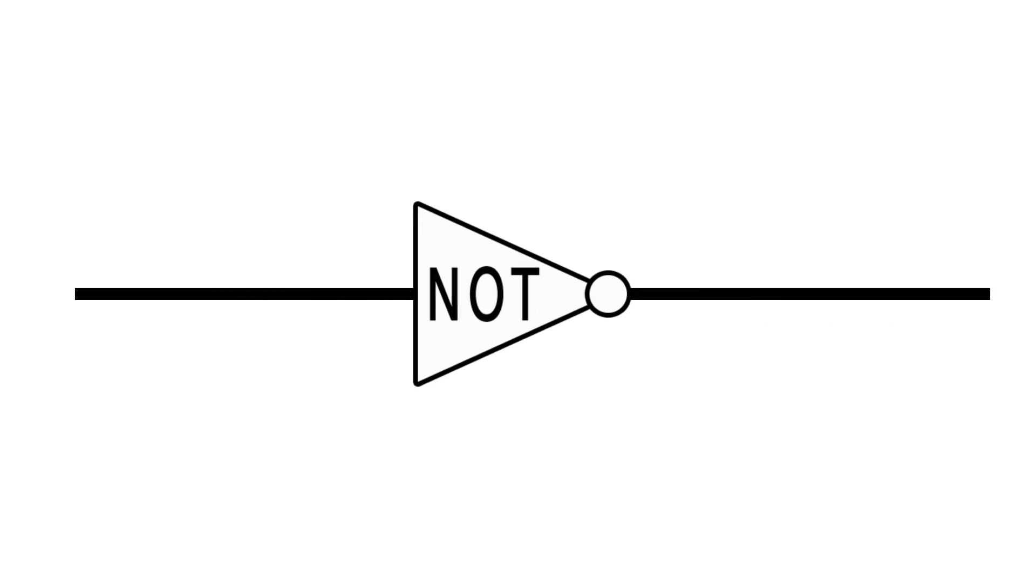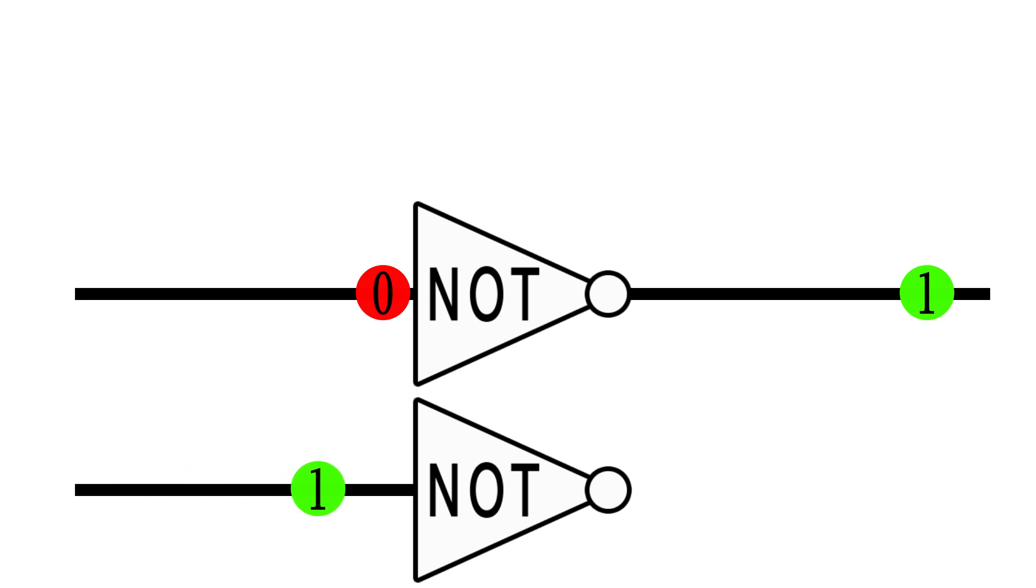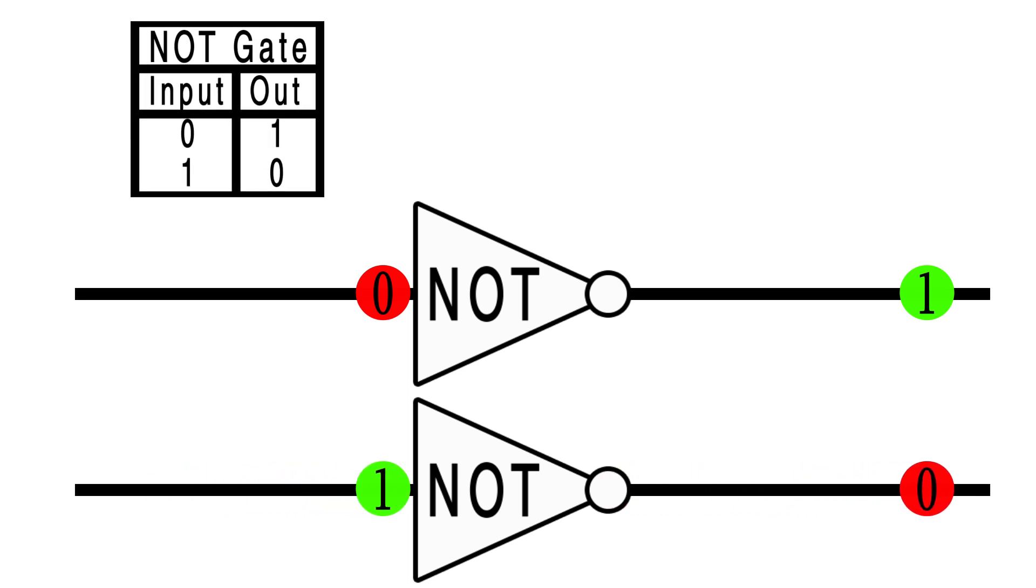Let's start with the NOT gate, which has only one input. If we input a 0 into this gate, it outputs a 1. If we input a 1, it outputs a 0. It's just a nice simple flip. Easy enough.